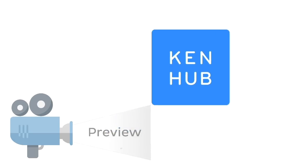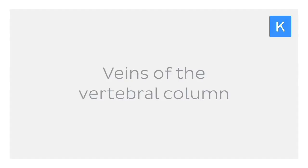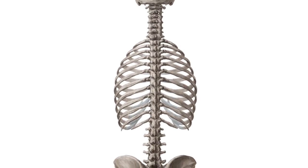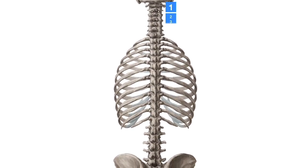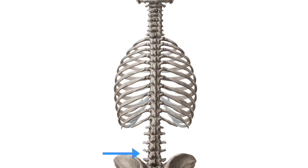Hey everyone, it's Nicole from KenHub. In this tutorial we're going to be talking about the veins of the vertebral column. The vertebral column is a structure made up of 33 vertebrae which are joined by a complex system of ligaments. It provides structure for the body and protects the spinal cord.